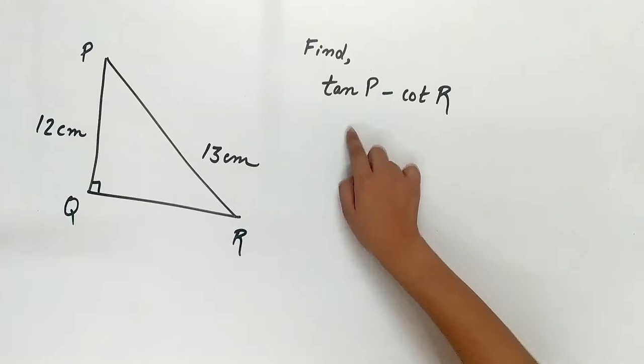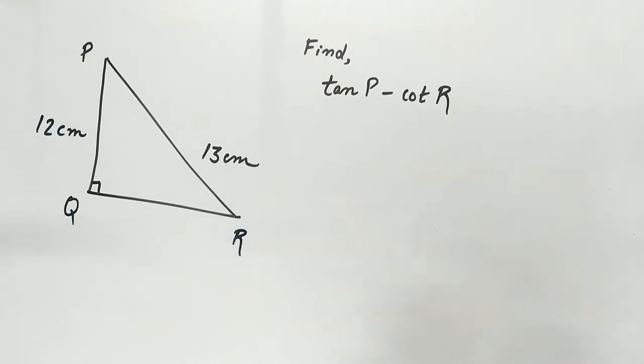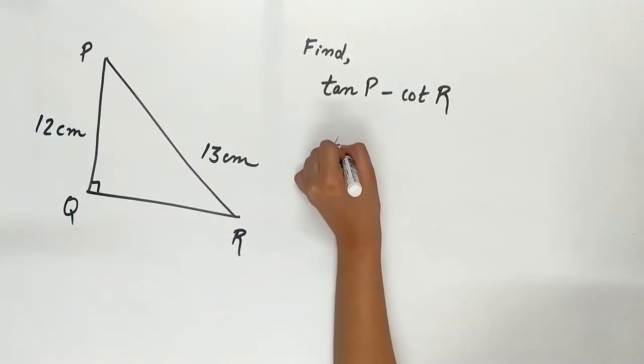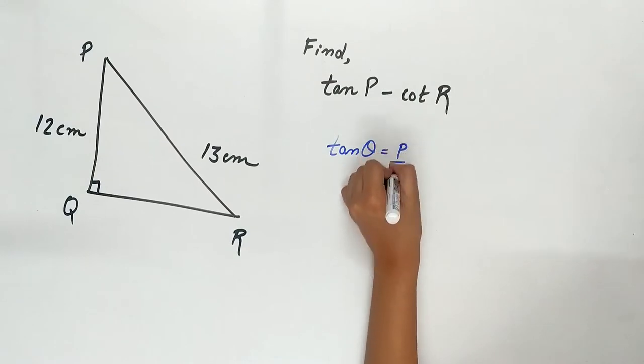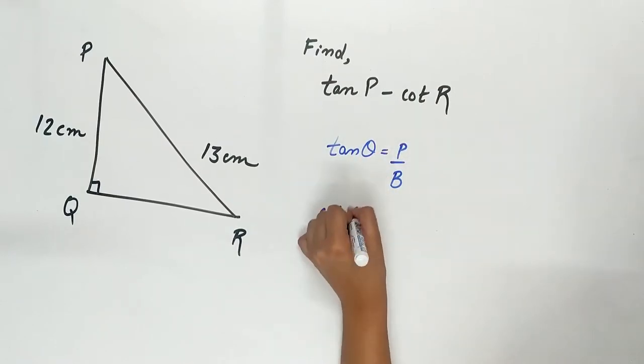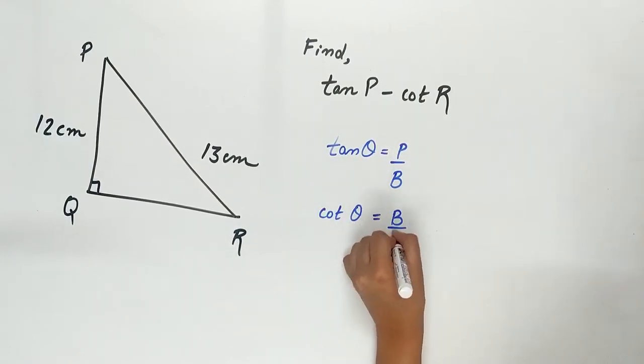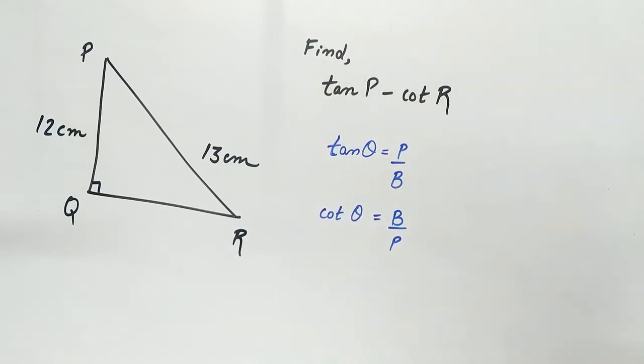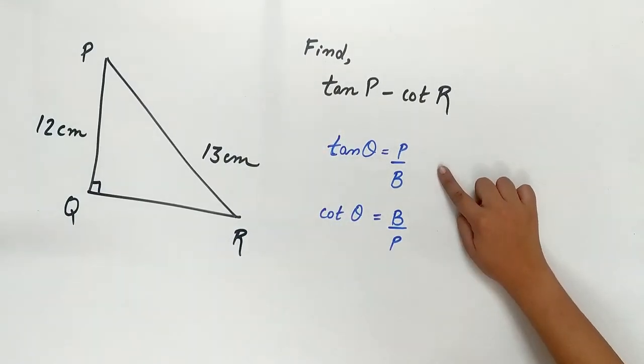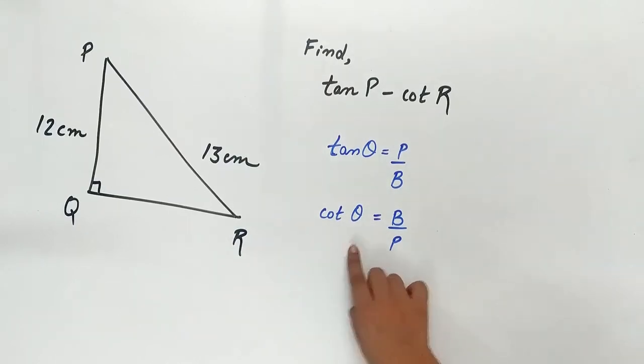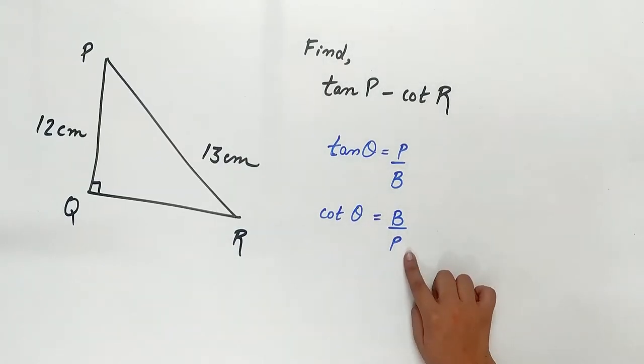Tan theta is equal to perpendicular upon base. Remember, tan theta equals perpendicular upon base, and cot theta equals base upon perpendicular.